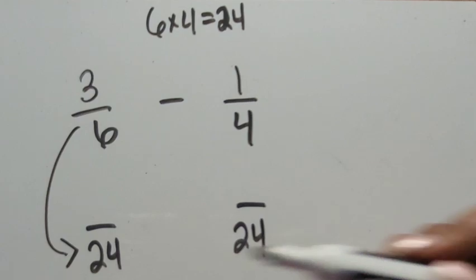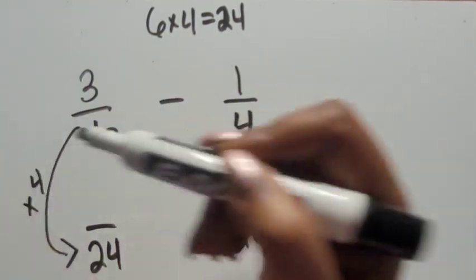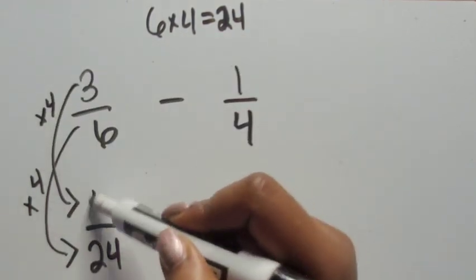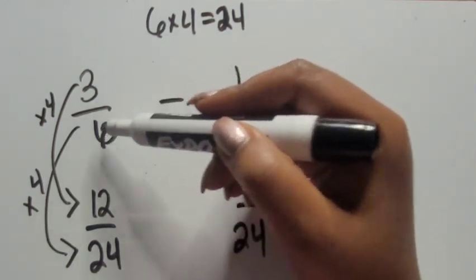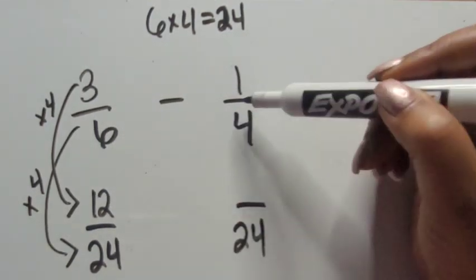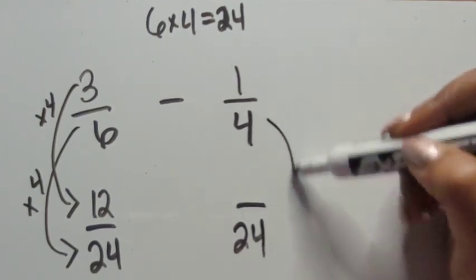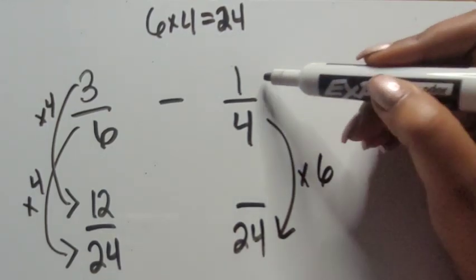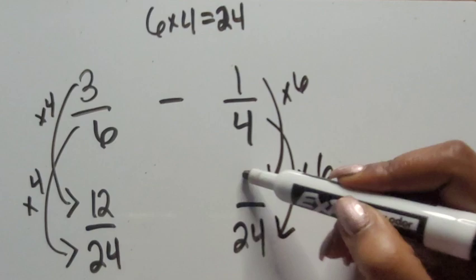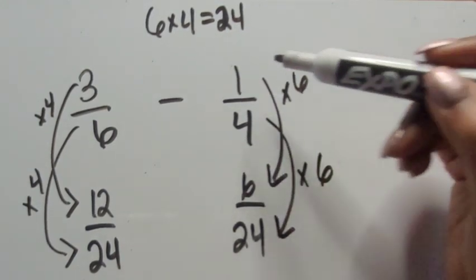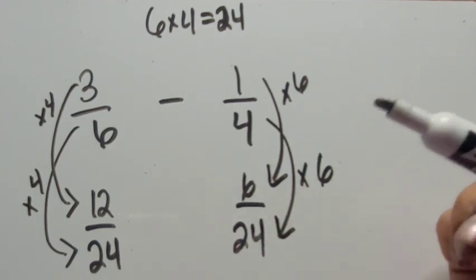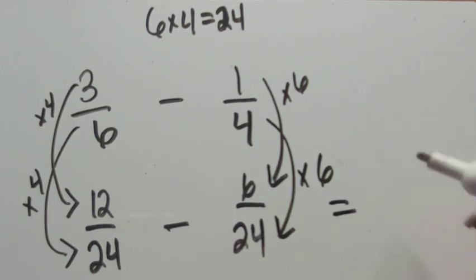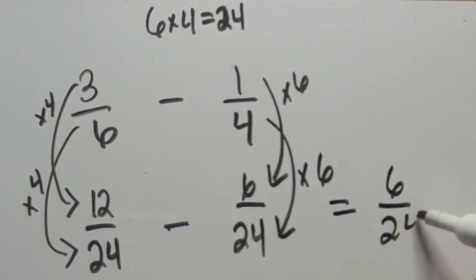Six times what equals twenty-four? Six times four. So we're going to do the same thing with our numerator: three times four equals twelve. Three-sixths is equivalent to twelve twenty-fourths. For the second fraction: four times six equals twenty-four, and one times six is six. So the equivalent fraction for one-fourth is six twenty-fourths. Now we have twelve twenty-fourths minus six twenty-fourths, which equals six twenty-fourths.